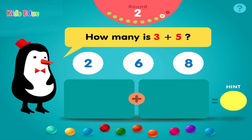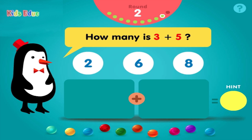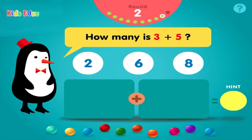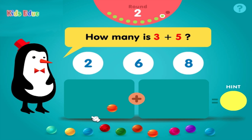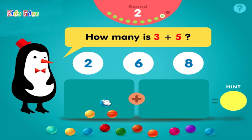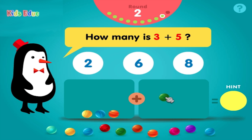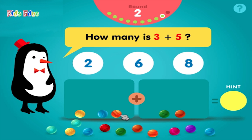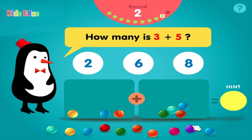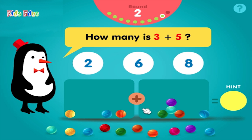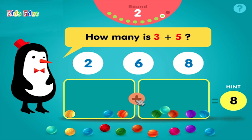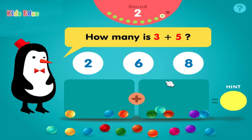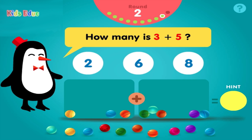How many is 3 plus 5? 1, 2, 3, plus 1, 2, 3, 4, 5, equals 8. Groovy!